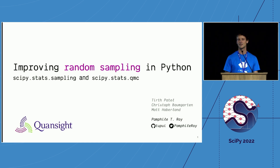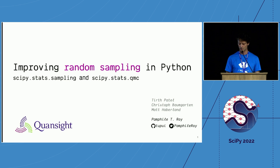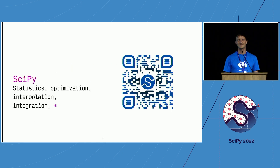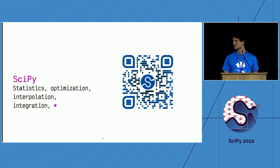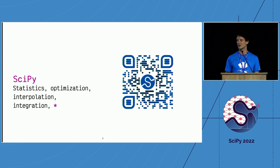Today I would like to talk about random sampling, and specifically two things we've been working on for roughly two or three years now in SciPy: stats.sampling and stats.QMC — QMC for Quasi Monte Carlo. I realized I should present what SciPy is, because during this week I could see that a lot of people were using SciPy without realizing it. SciPy is a general scientific toolkit library in Python covering statistics, optimization, interpolation, integration, spatial tools, and more. It's really a general library at the foundation of bigger packages like Scikit-learn and Scikit-image.